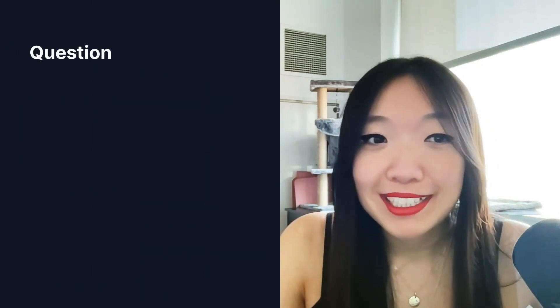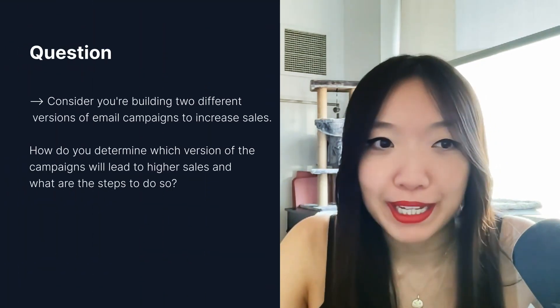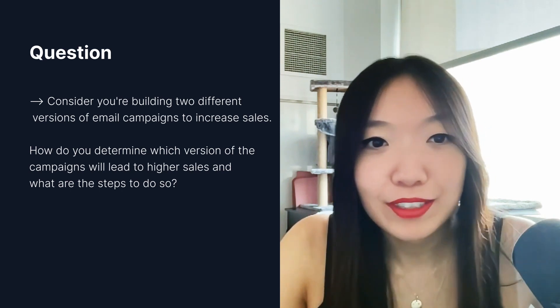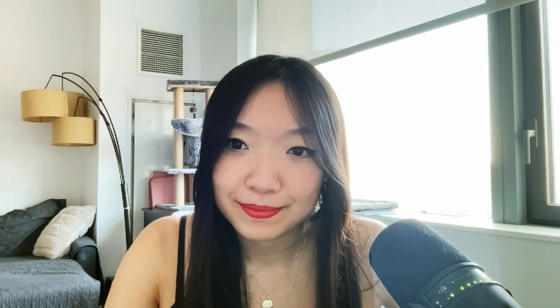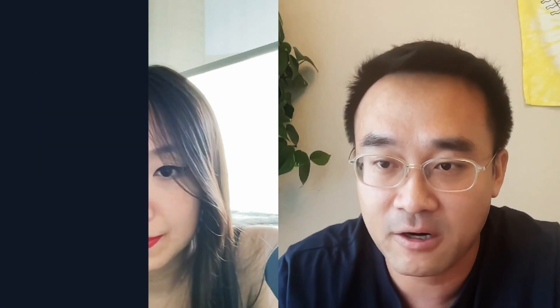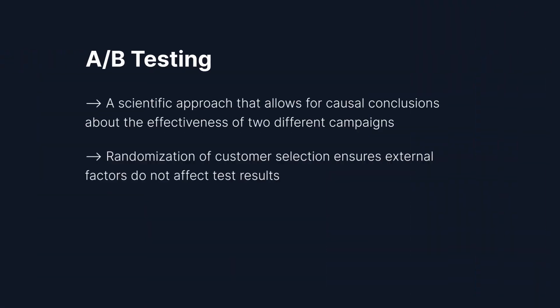Our question today is: consider you're building two different versions of email campaigns to increase sales. How do you determine which version of the campaigns will lead to higher sales, and what are the steps to do so? So the question is how to evaluate the two campaigns we're building. To evaluate the product success, I would recommend running an experiment or A/B testing to measure the effectiveness of the campaigns and see which one is a winner.